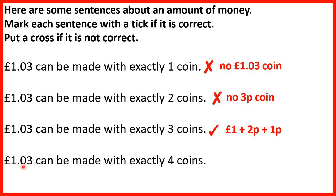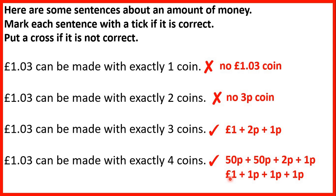And finally, £1.03 can be made with exactly 4 coins — that's true as well, because we can have a 50-pence coin, another 50-pence coin, so that's £1.00, a 2-pence coin and a 1-pence coin, so that's 3 pence. Or we could have a £1 coin and then 3 one-pence coins, because 3 one-pence coins total 3 pence, so that's 4 coins to give us £1.03.